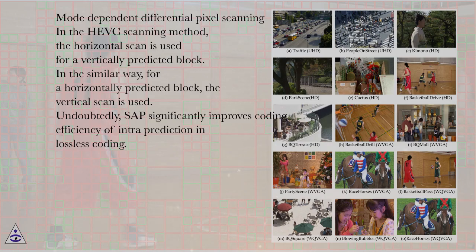Mode-dependent differential pixel scanning. In the HEVC scanning method, the horizontal scan is used for a vertically predicted block. In the similar way, for a horizontally predicted block, the vertical scan is used.